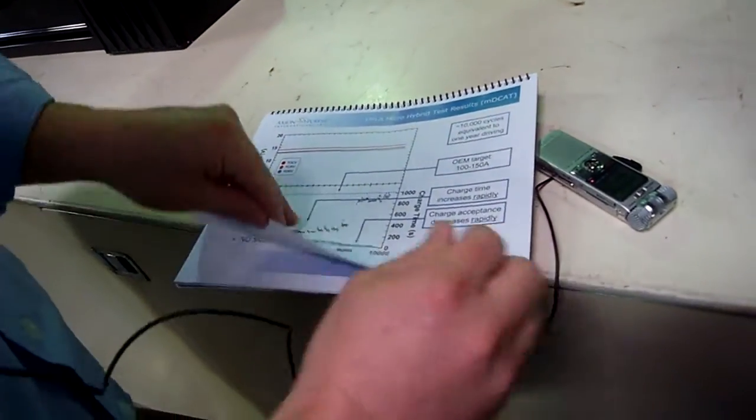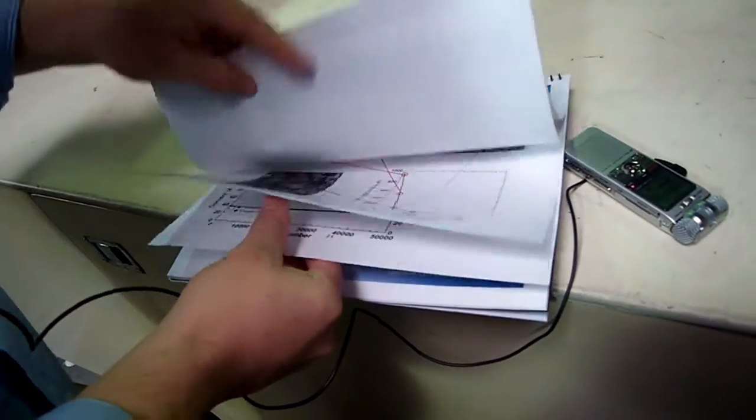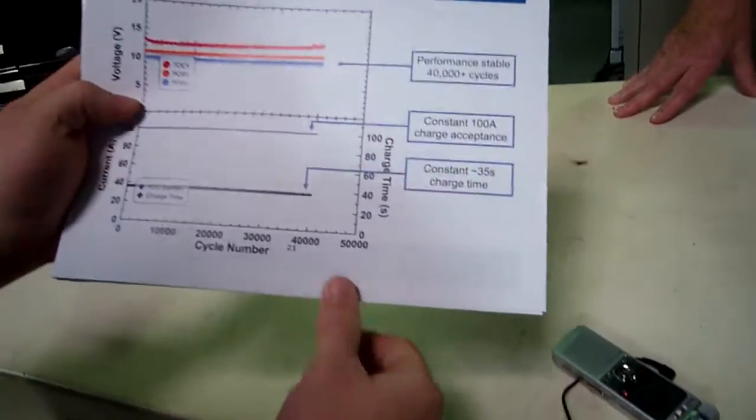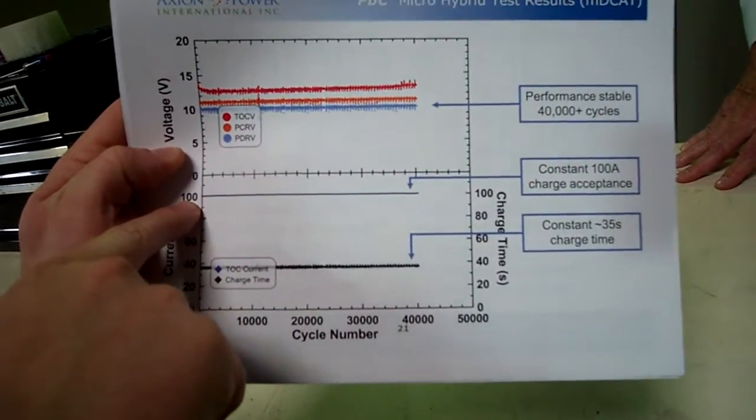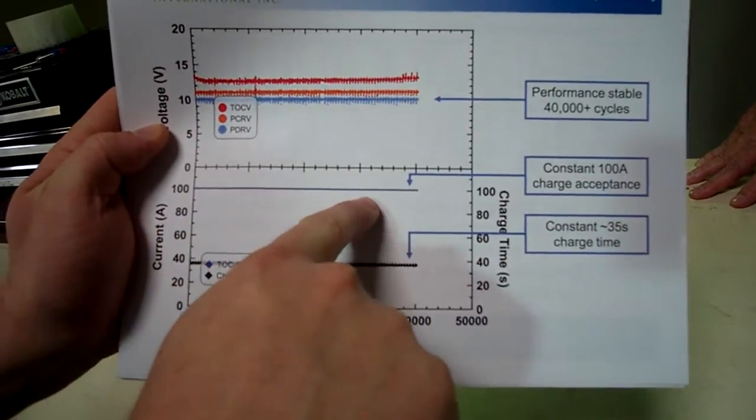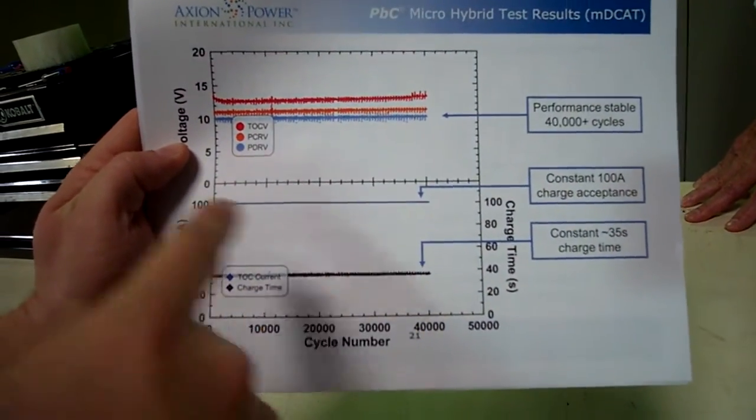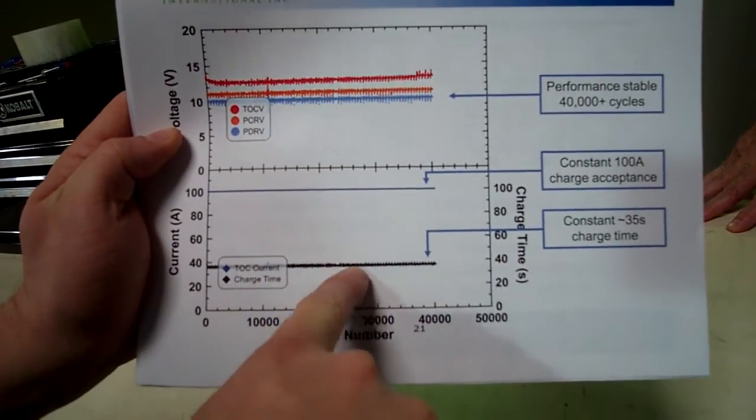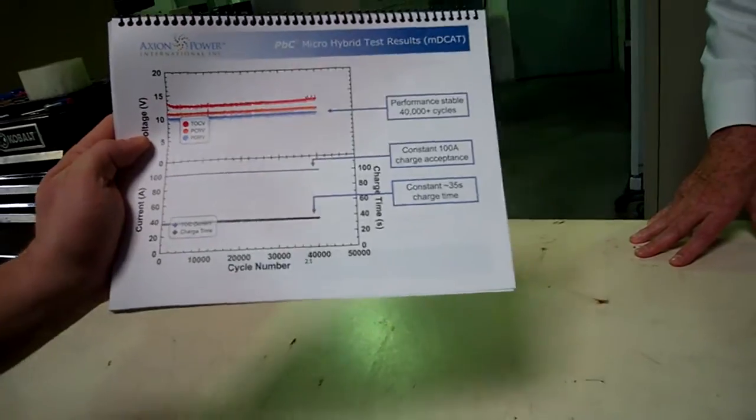Whereas with the PVC battery, you don't see any decrease in charge acceptance. The experiment is set up for 100 amp maximum charge acceptance, so you see that over its entire cycle life. And for that reason, the charge time stays constant at a very low 35 seconds. So that's the big difference between the two.